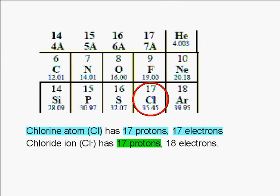An ion with 17 protons and 18 electrons is an ion derived from a chlorine atom with a negative 1 charge. We call this ion the chloride ion.